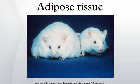In humans, adipose tissue is located beneath the skin, around internal organs, in bone marrow, and in the breast tissue. Adipose tissue is found in specific locations referred to as adipose depots. Apart from adipocytes, which comprise the highest percentage of cells within adipose tissue, other cell types are present, collectively termed the stromal vascular fraction of cells. SVF includes preadipocytes, fibroblasts, adipose tissue macrophages, and endothelial cells.